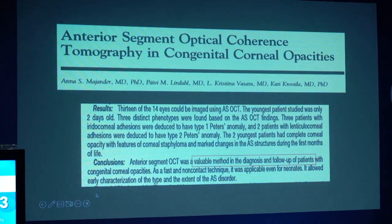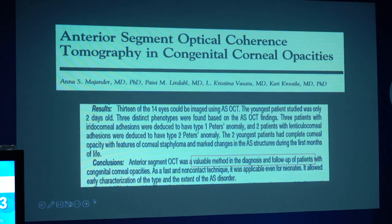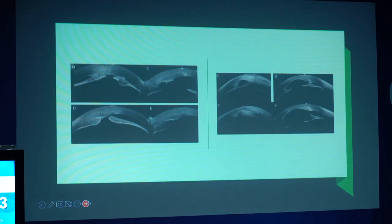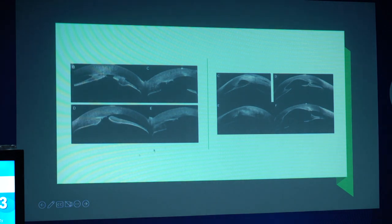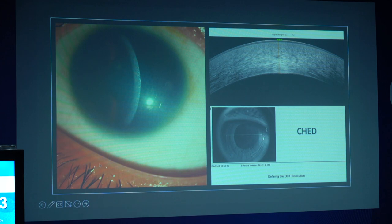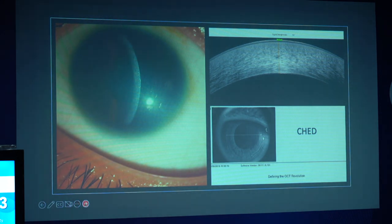In congenital corneal opacity, OCT plays a vital role in diagnosis and follow-up, especially in patients with Peters anomaly, to differentiate associated lenticular cornea or iridocorneal adhesions. If you look at this OCT, you can make out that the iris is adhering to the posterior surface of the cornea. Although UBM would be necessary to look at lenticular adhesions, OCT is a useful screening tool. This is also a patient of sclerocornea where you see diffuse stromal thickening and hyperreflectivity in the posterior stromal layers.